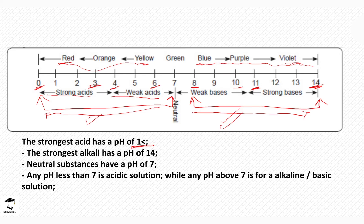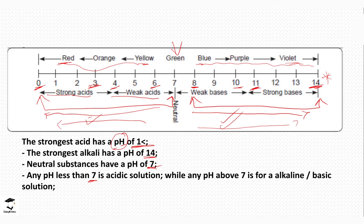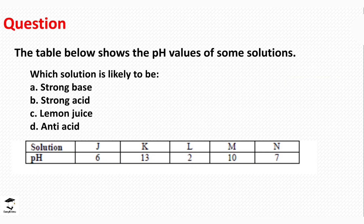The strongest acid will have a pH less than 1. Note how we write 'pH' — lowercase p, uppercase H. The strongest alkali will have a pH of 14. Neutral substances have a pH of 7 — for example, distilled water. Any pH less than 7 is acidic in nature, and any pH above 7 is alkaline or basic in nature.